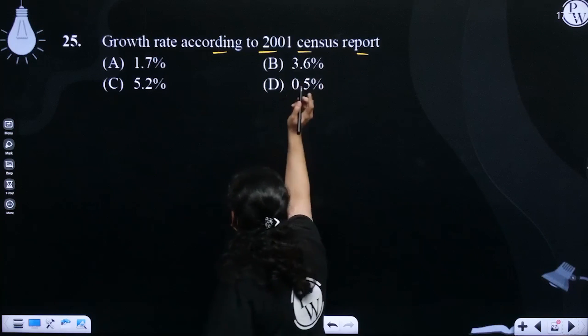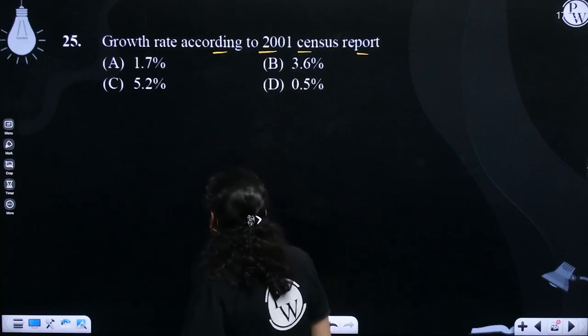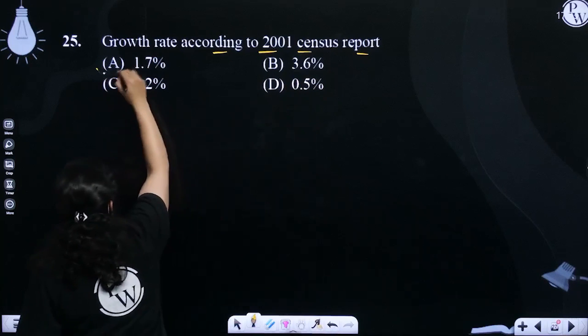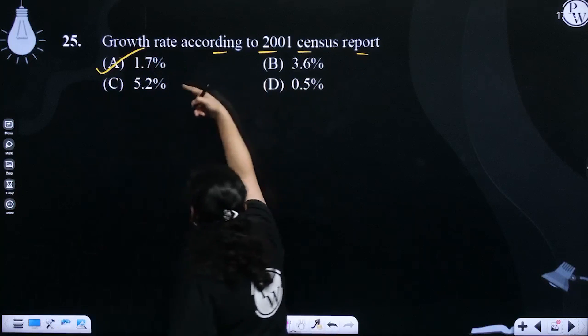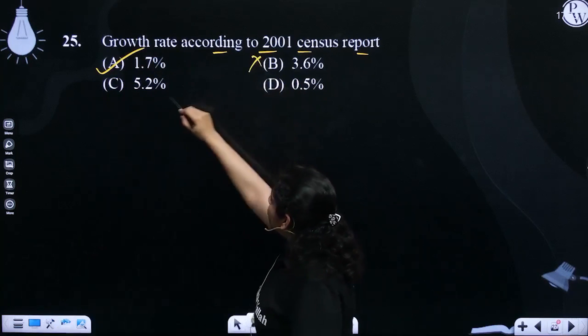Here, we have to tell that 2001 census report according to growth rate, it was 1.7%. Okay, 1.7% and the other options will be wrong.